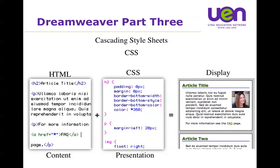So we took this HTML document and by just redefining and writing some rules for those existing elements - the H2, the P tag, and the A tag - I get the designed look instead of the plain look. Here's what happens: take your HTML document, which is the content of the page and the semantic structure, and add a set of CSS rules to it. When those two documents go together to the browser, the browser reads both documents and formats the page in the way that I want it.